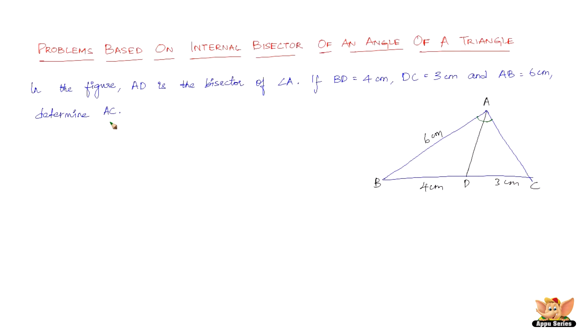It is pretty straightforward. The property or the concept that we have to use to find the side AC is that a line that bisects an angle divides the opposite side, in this case it's BC, in the ratio of the other two sides or the sides containing the angle.